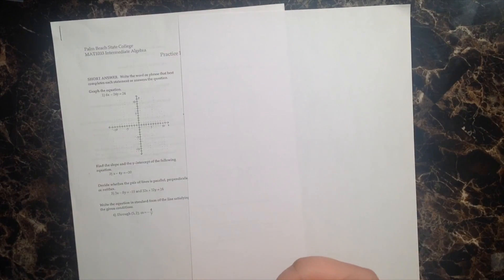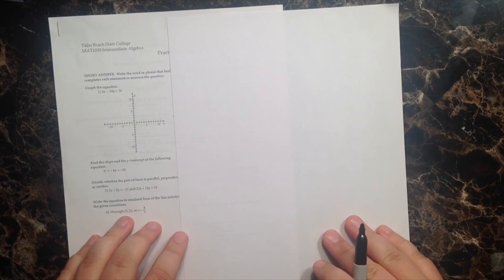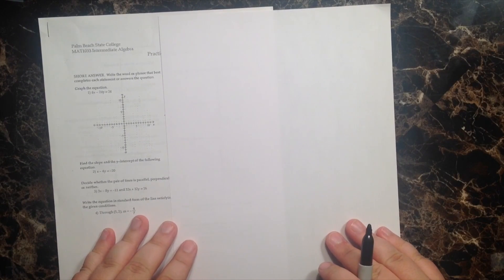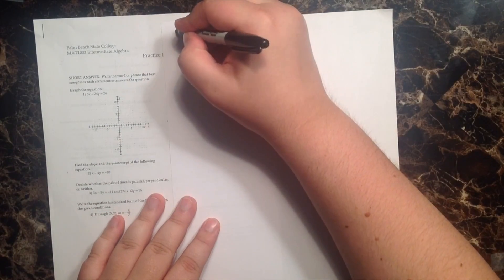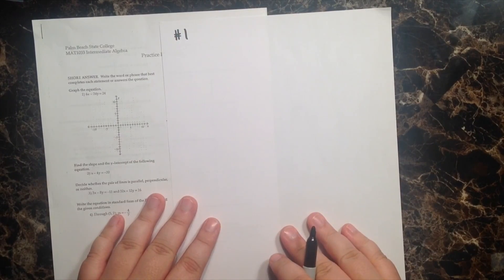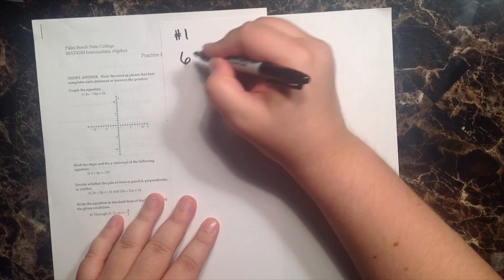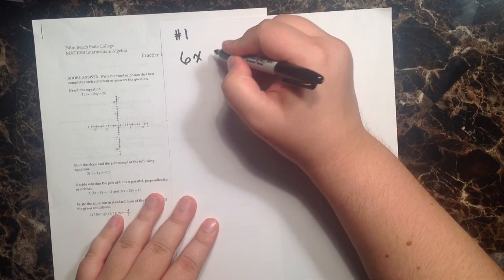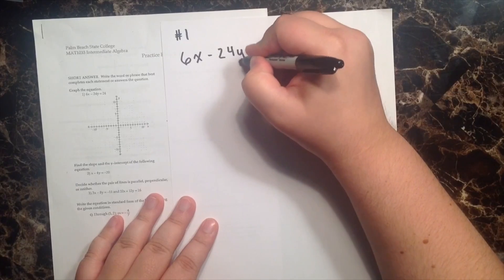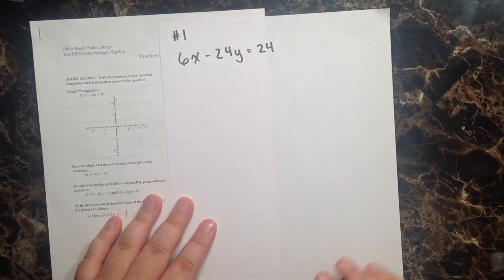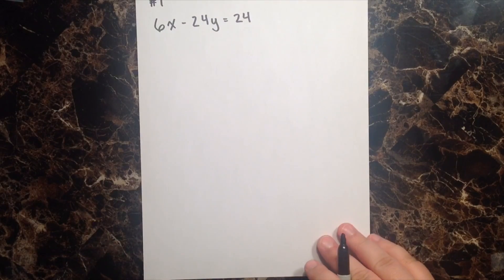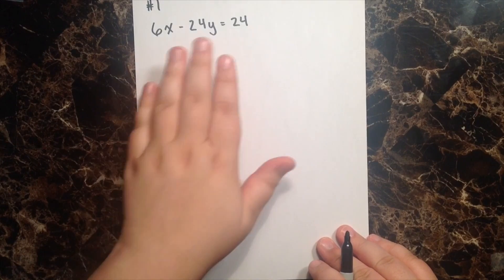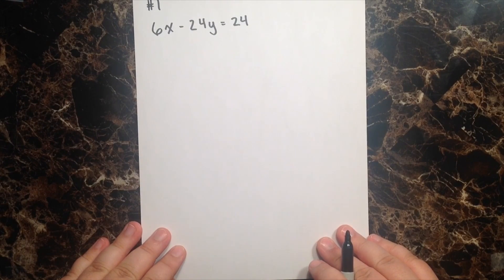And the directions for number one, because it's always good to read the directions so we know what we're being asked to do, say to graph the equation. That seems pretty straightforward. They give us an equation that they want us to graph, and that equation is 6x minus 24y equals 24. So let's go ahead and put our practice exam to the side and just focus on what they've given us. Now, if you recall from chapter 3, which is where this material comes from, 3.1 actually,